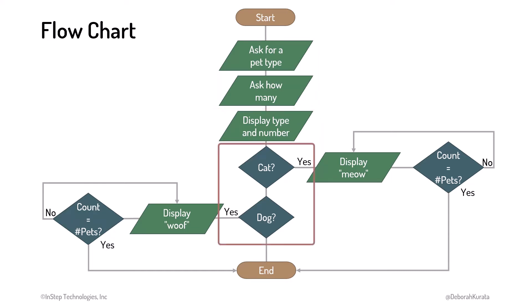We use a diamond for a decision, with branches for the options. Each of our if statements are represented with a diamond because they indicate a decision.